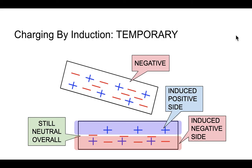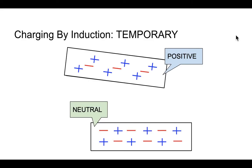What about the other way around? What if this was a positively charged object and we bring it closer to a neutral object? Would a positively charged object still be attracted to a neutral object? And the answer is yes, and I will show you why — you can probably even guess what's going to happen here.